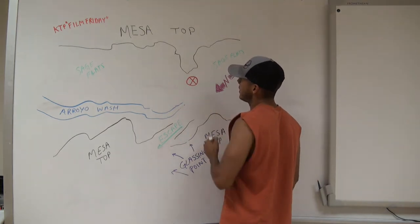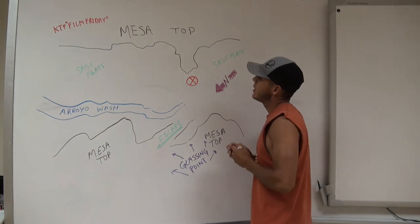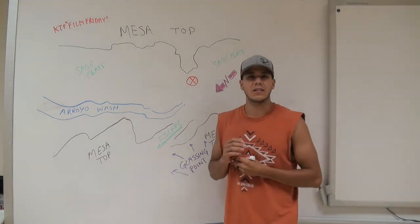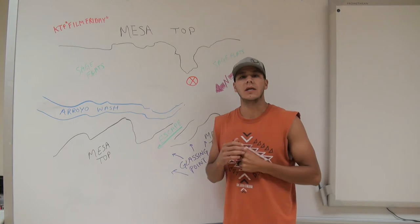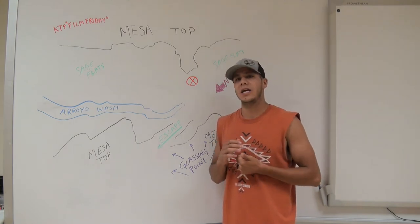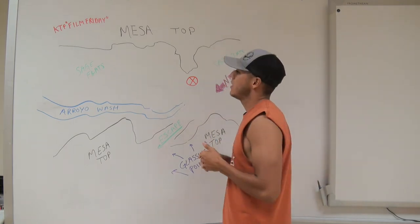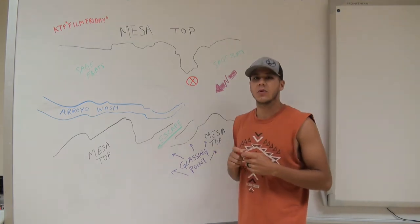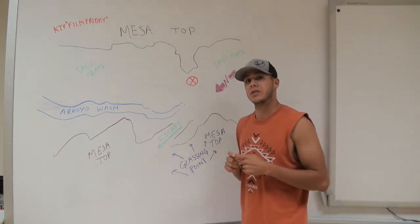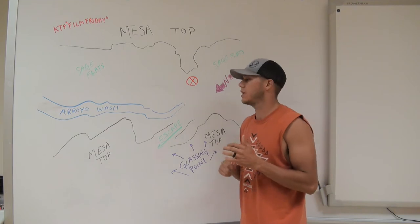From right here in the bottom, just out in the middle of the sage flats, bedded down, just sunning. He's out there taking in the sun. We're talking like a 190-inch typical here, a very good buck, a very smart buck. We knew he was going to be hard to kill where he was at.